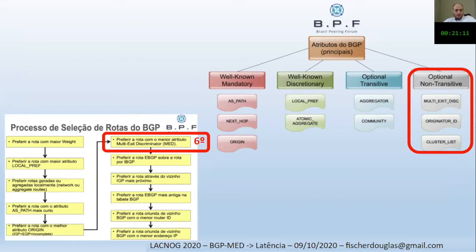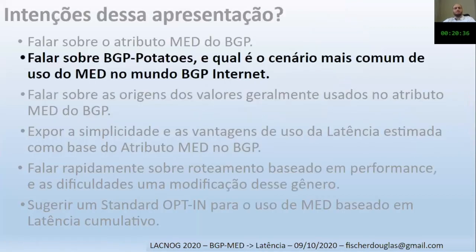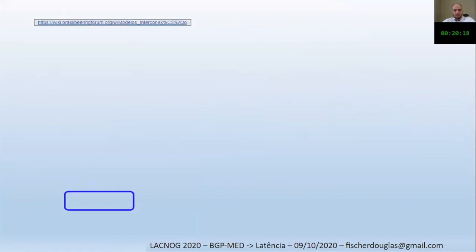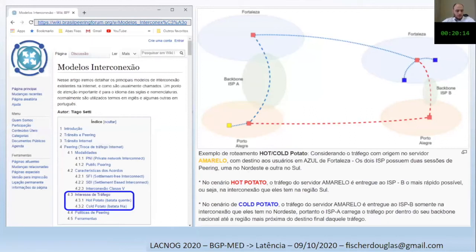MED is an optional non-transitive attribute, and we are going to analyze the selection criteria for BGP. Comparing with Cisco, it is the fifth or sixth attribute to analyze — so the MED is relatively lightweight. You might ask: why go into something that doesn't make such a difference? Well, I would like to speak about BGP potatoes. Those who work in networks already know this type of scenario, which is quite common — and that is where you discover the best use for MED.